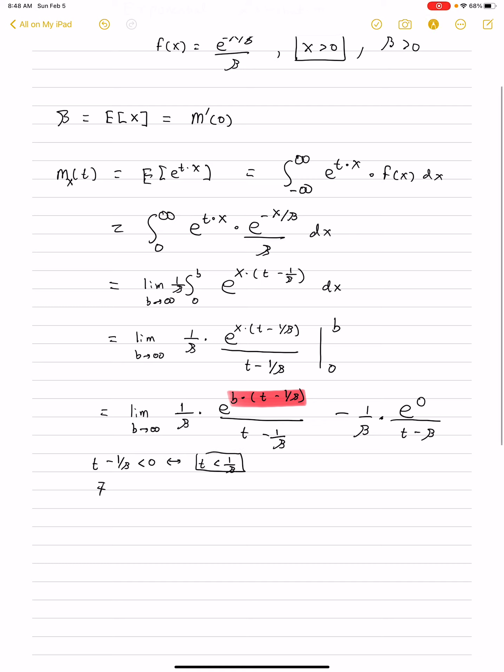And that is where the moment generating function exists, is when t is less than beta. So, if this is negative, the limit will be 0, because it will be a large positive number times by a negative number going to infinity. And then, that converges to 0.